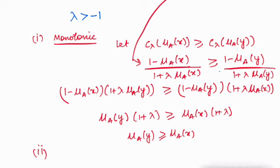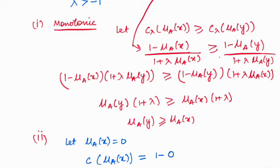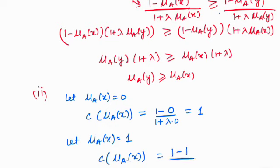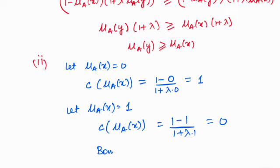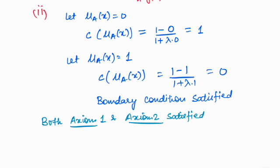Let us move on to axiom number 2, the boundary condition. When mu_A(x) equals 0, the complement gives 1 minus 0 upon 1 plus lambda times 0, which equals 1. When mu_A(x) equals 1, the complement gives 1 minus 1 upon 1 plus lambda times 1, which equals 0. So both boundary conditions are satisfied.